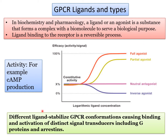Ligand binding to a GPCR stabilizes a particular structural conformation causing activation of distinct signal transducers such as G proteins. A separate pathway involves arrestin binding to the GPCR following receptor activation, leading to receptor internalization into endosomal vesicles, which can then follow different pathways — either recycling the receptor back to the membrane or sending it to the proteasomal degradation pathway. This signaling pathway will be explained in more detail in the second part of the lecture.